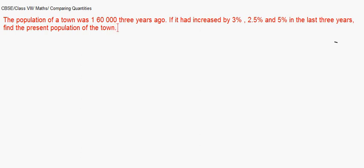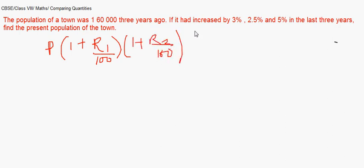In this case, the formula we generally apply is P, the base population, times (1 + R₁/100) times (1 + R₂/100) times (1 + R₃/100), and so on for as many years and various rates that can be taken.